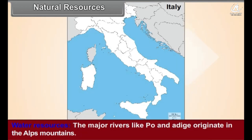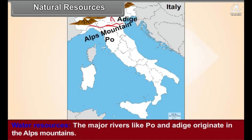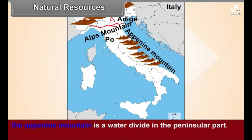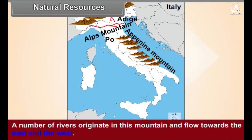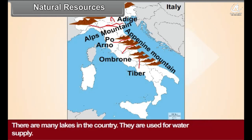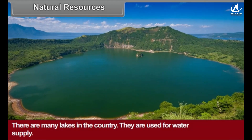Natural Resources – Water Resources: The major rivers like the Po and Adige originate in the Alps. Due to snow melt from the Alps, the River Po receives discharge all year round. The Apennine mountain range acts as a water divide in the peninsular part. A number of rivers originate here and flow towards the east and west; the major ones among these are the Ombrone, Arno, and Tiber.